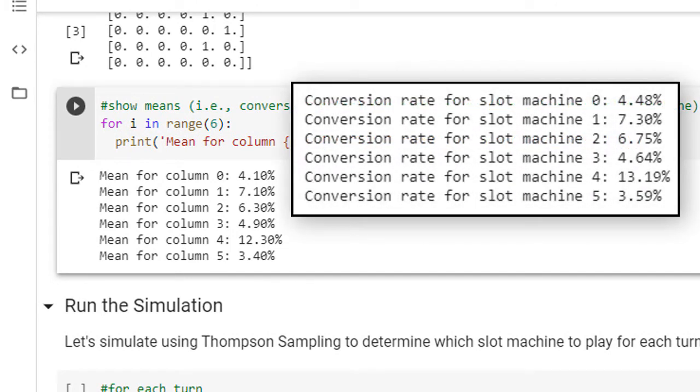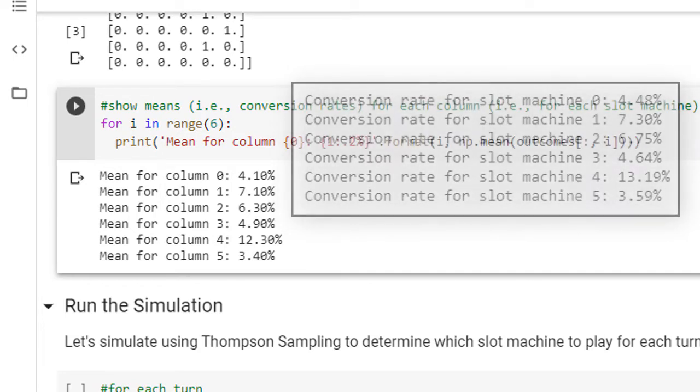As you can see, these values are close to the theoretical conversion rates that we defined earlier, but are not exact because wins and losses were generated with a random number generator, and there are only 1,000 turns in our dataset. If we specified a much larger dataset of turns, say, 1,000,000 turns, then we would expect these true conversion rates to be very close to the theoretical conversion rates for each slot machine.